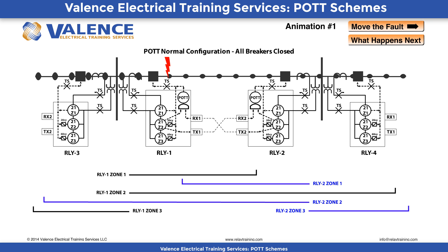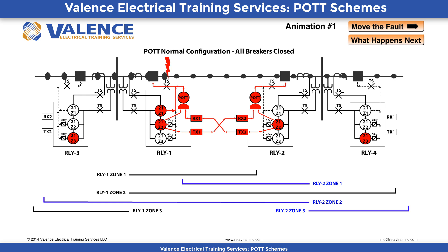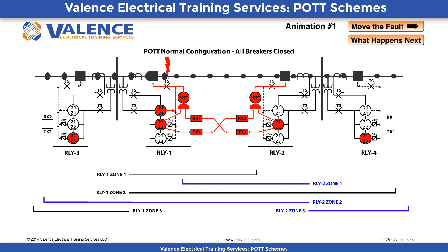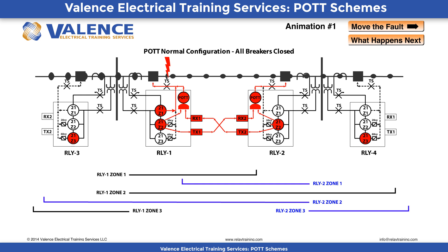Which elements will pick up in Relay 1 if a fault occurs close to Relay 1 as we show here? Which elements will pick up in Relay 2? Zone 1 and Zone 2 will pick up in Relay 1 because the fault is closest to Relay 1, while only Zone 2 will pick up in Relay 2. Relay 1 should trip instantaneously because of the Zone 1 pickup, but it will also send a POT signal to the other relay because it has detected a Zone 2 or potential overreaching fault on the line.